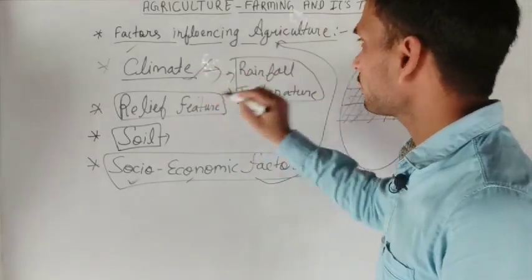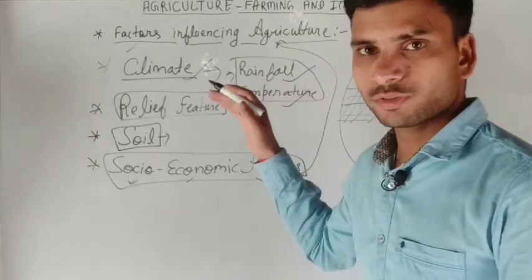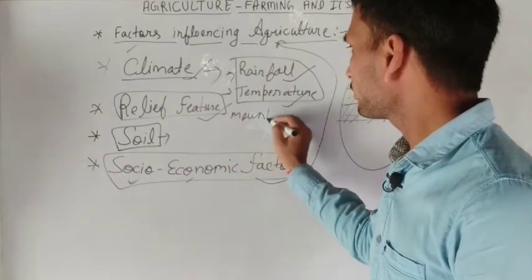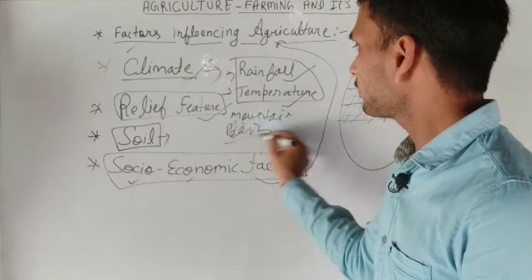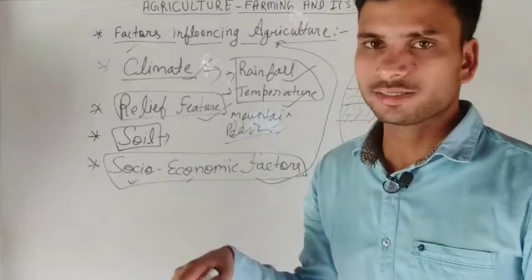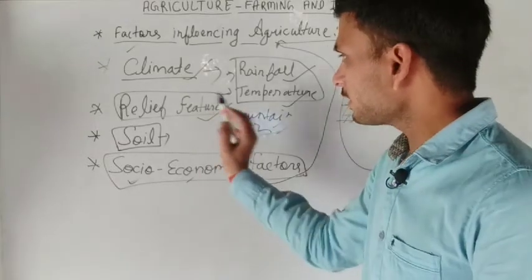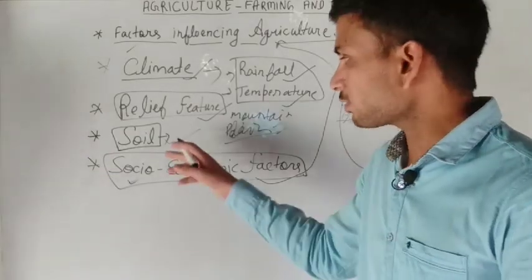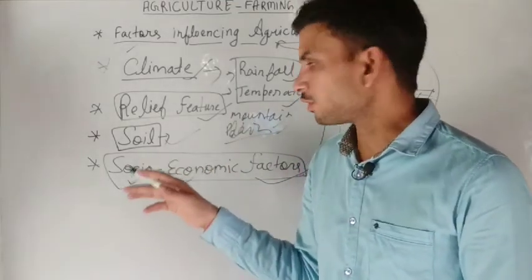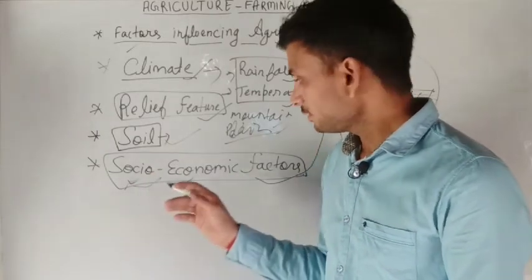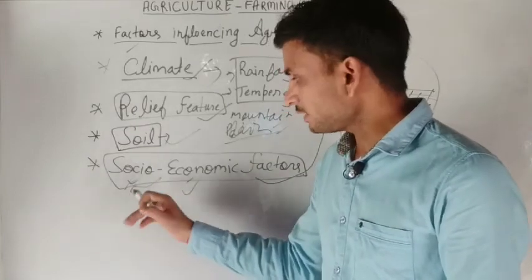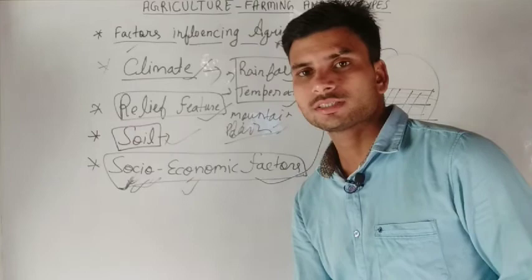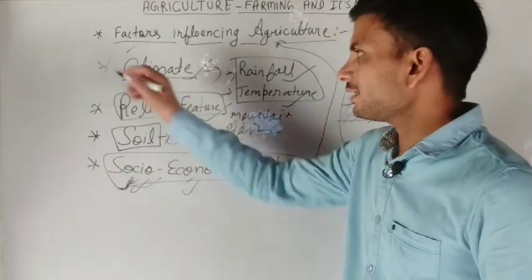To summarize the major factors influencing agriculture: first, climate — rainfall rate and temperature vary everywhere and affect agriculture. Second, relief features — whether the area has mountains or plains influences agricultural activity. Third, soil type — the type of soil is a major factor in the production of different crops. Fourth, socio-economic factors — including labor, finance, technology, and market availability.